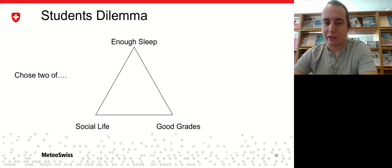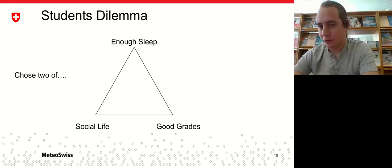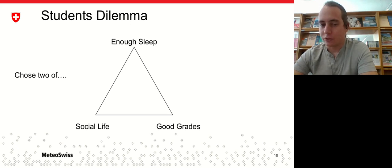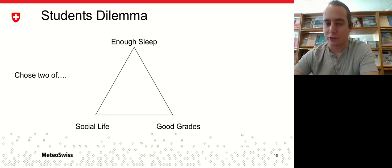To illustrate this, another example of this classic choose two problem might be the student's dilemma. If you're a student, you could try to get enough sleep and have a social life, but then your grades start to suffer. Or you might want to have good grades and have a social life, but then you wouldn't have enough time for sleep. As soon as you commit to two of these goals, the goal on the third vertex of the triangle becomes contradictory.